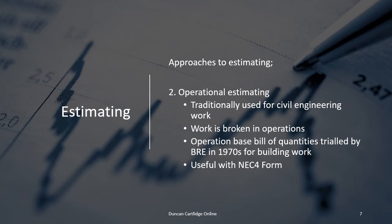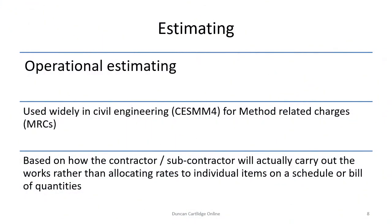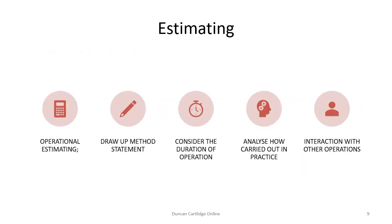An alternative approach to resource estimating is operational estimating. For this, the project is divided into operations, and pricing the operations is based upon how the contractor will actually carry out the work. Operational estimating is widely used in civil engineering work, due to the scale and size of civil engineering projects. In addition, civil engineering tender documents allow the contractor to determine how the works will be carried out with the use of method related charges. The operational approach is further illustrated on the slide.